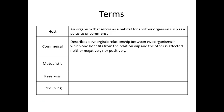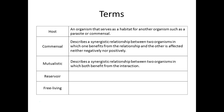A mutualistic relationship — the synonym I use is marriage. Who should benefit in a marriage? Both people. It's supposed to be a partnership where both benefit. In this synergistic relationship, a large number of the bacteria in your gut actually benefit you. Does anyone know what they produce that is helpful? You gave them a place to live and the extra food you don't digest — what are they giving you?